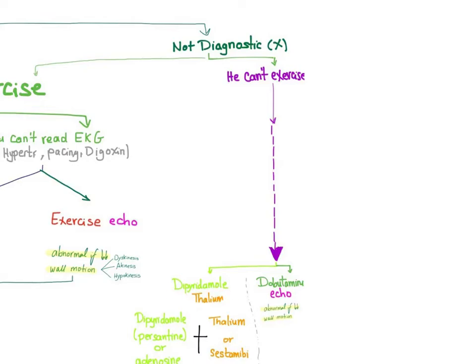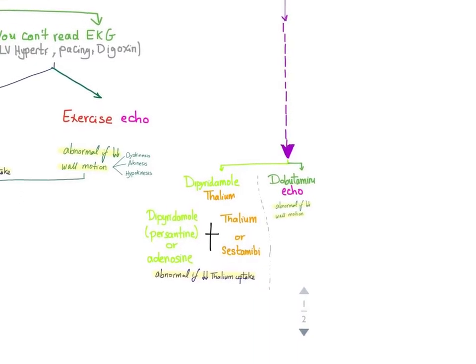Dipyridamole will increase the contraction, and you use thallium as the nuclear imaging method. That's dipyridamole plus thallium. How do you know if there is a problem? You'll see decreased thallium uptake. Or you can do dobutamine echo. How do you know if there is a problem? Abnormal decreased wall motion.